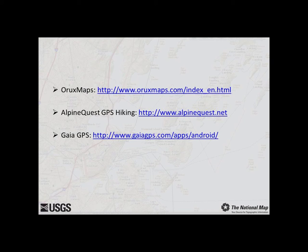To use the National Map data on your mobile device, start by installing either Oryx Maps, Alpine Quest GPS Hiking, or Gaia GPS. We will briefly demonstrate all three applications, starting with Oryx Maps.